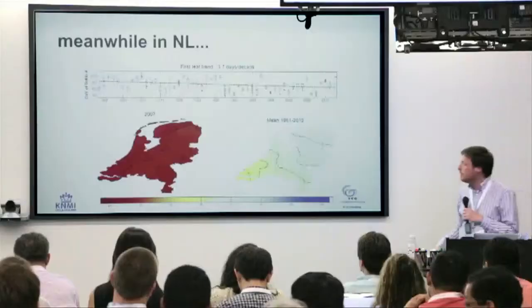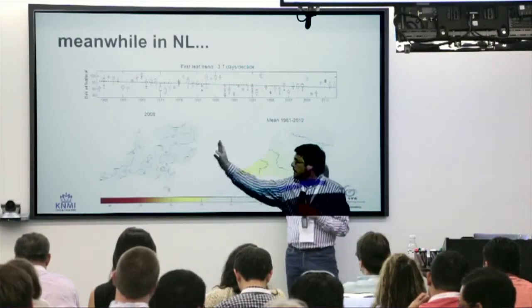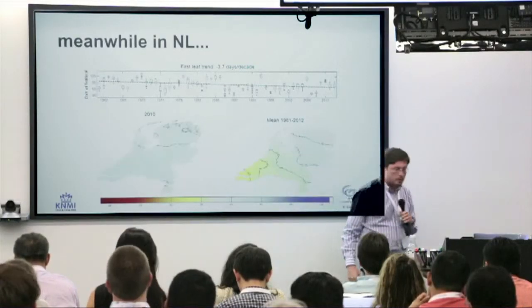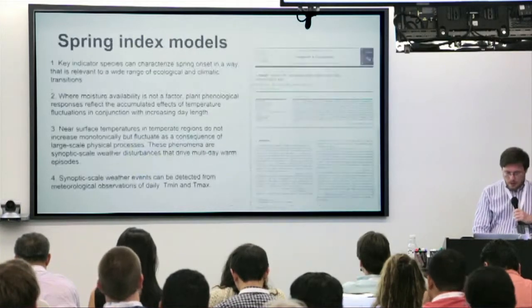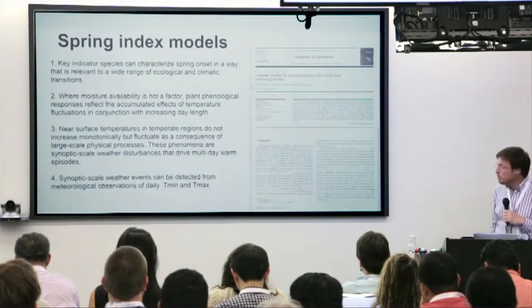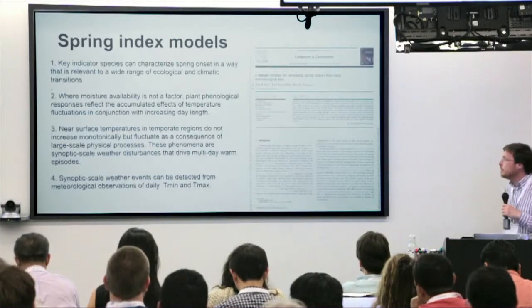You also see in this animation how the dynamic changes from year to year are very different. I was able to do this with what we call the spring index models. We have a paper out — it's now in press — on a MATLAB toolbox. This is the one I used to generate the previous animation.